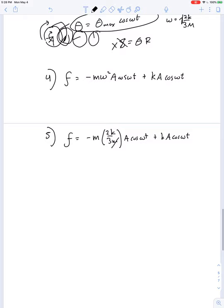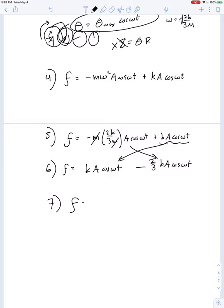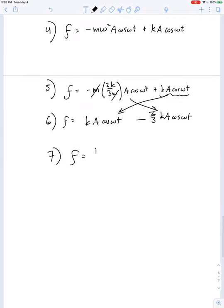So this m cancels out. So, we have f is equal to, let's transpose this, k a cosine omega t minus 2 thirds k a cosine omega t. So the friction force is equal to 1 third k a cosine omega t.